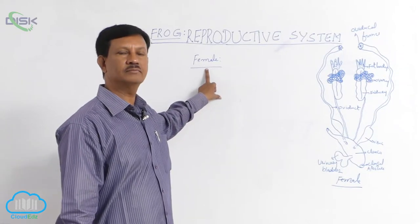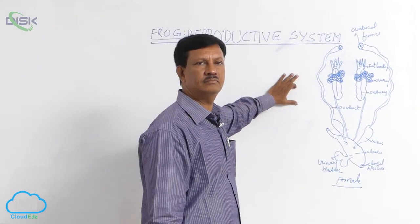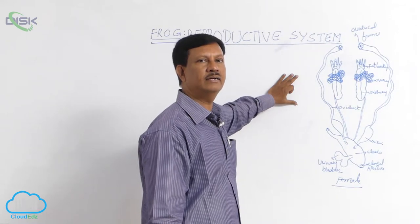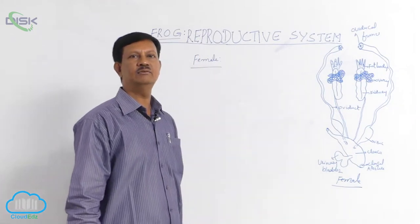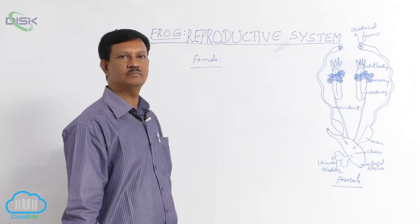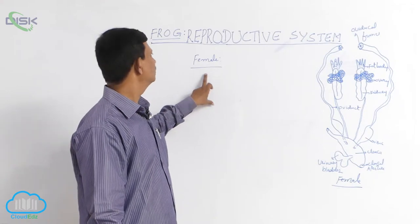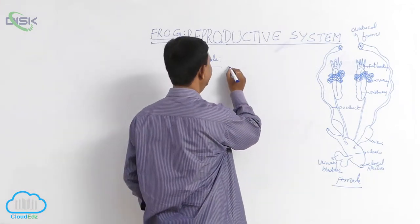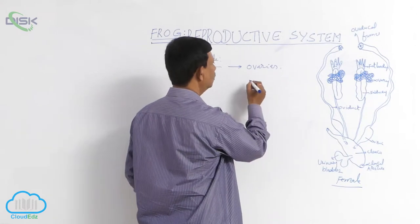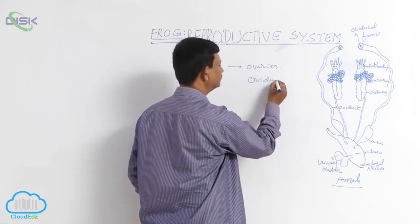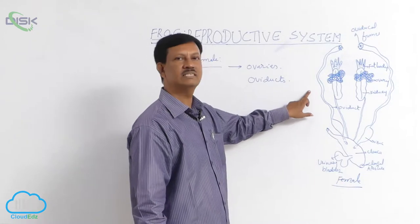The female reproductive system of frog is not closely associated with the excretory system. But in male frog, the excretory system and reproductive system are closely associated with each other, and these two systems are collectively known as the urinogenital system. In female frog they are not closely associated, so the female reproductive system mainly consists of a pair of ovaries and a pair of oviducts.